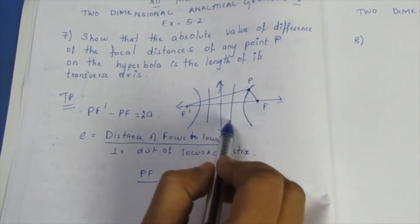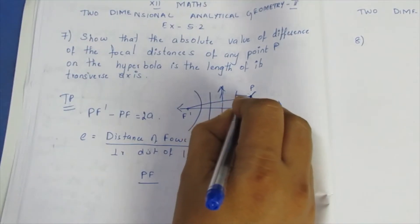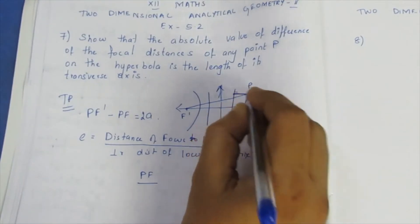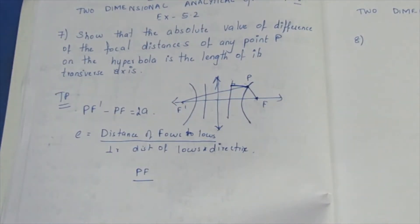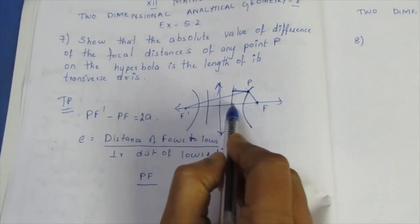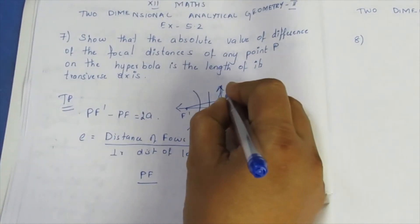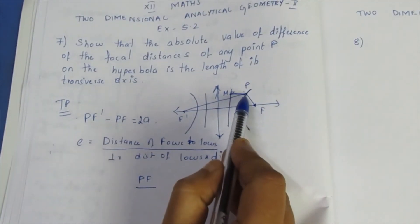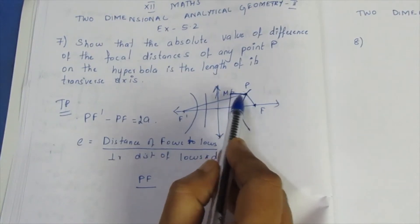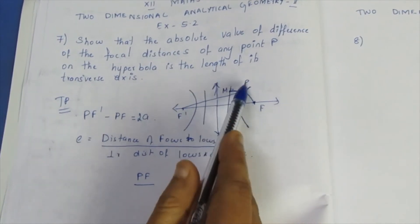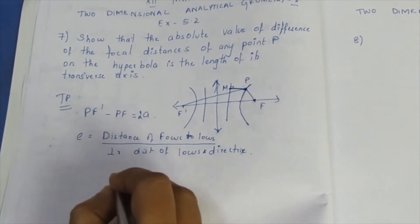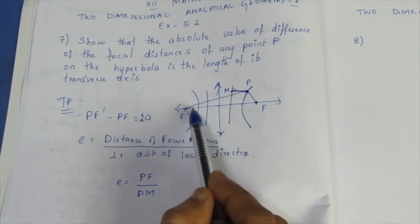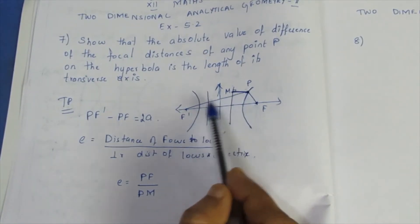The directrix is drawn, and the perpendicular distance from point P to the directrix — we call this point M, and M dash for the other directrix. The distance PM is the perpendicular distance from P to the directrix. So the focal distance PF equals e times PM.